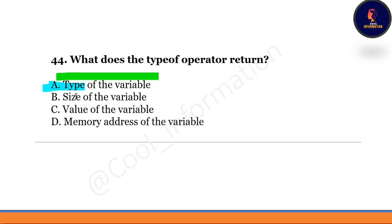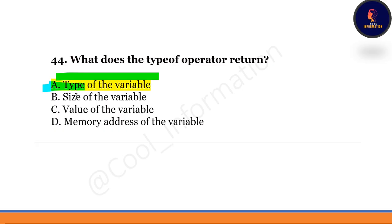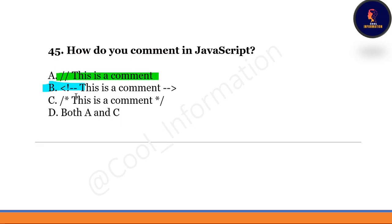Next question: what does the typeof operator return? Options include type of the variable, size of the variable, value of the variable, and memory address of the variable. The correct option is option A — typeof returns the type of the variable.